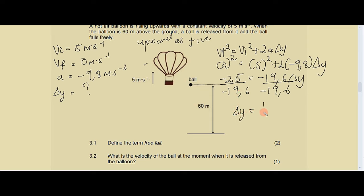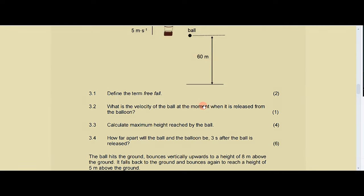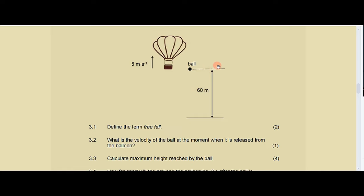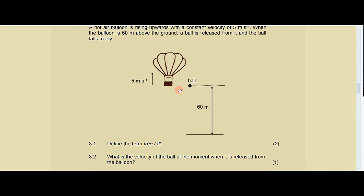Now we have 3.4: how far apart will the ball and the balloon be three seconds after the ball is released? This is worth six marks. Don't panic — it's six marks because you'll be using more than one formula. We calculate the distance covered by the balloon and the distance covered by the ball, then find the difference. The ball goes momentarily upward then downward, while the hot air balloon continues moving upward. We need to find how far apart these two objects are three seconds after release.